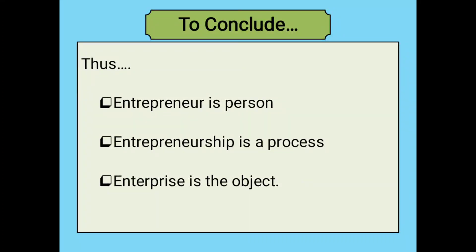To conclude: entrepreneur is a person — a person who is starting a business. Entrepreneurship is a process — the process involved in bringing all the aspects and elements of production together. And the particular firm, company, or business is called enterprise. I hope you have understood these three basic aspects of entrepreneurship development.